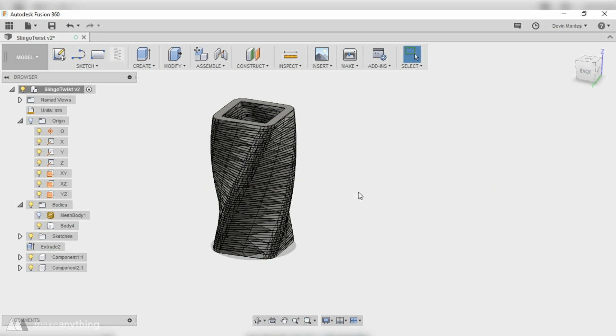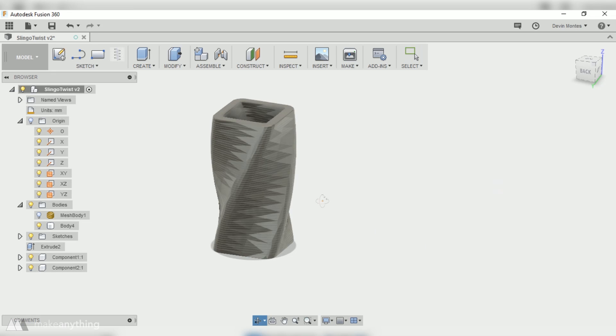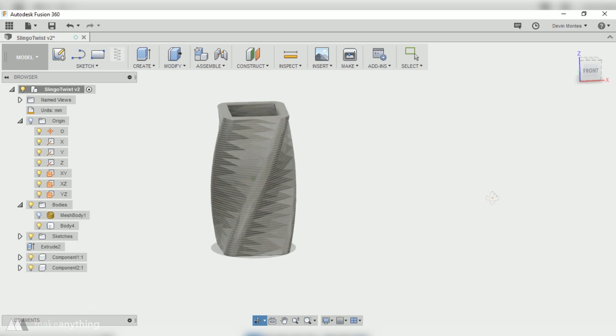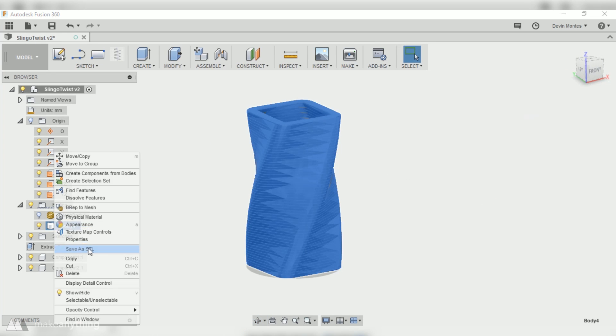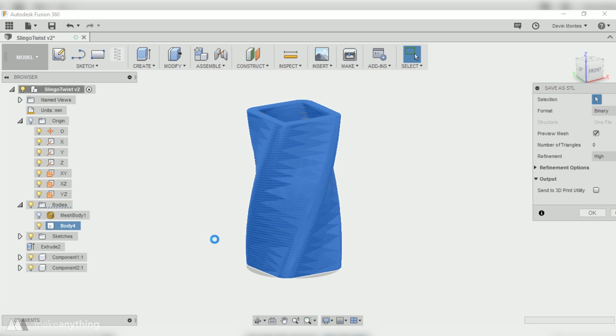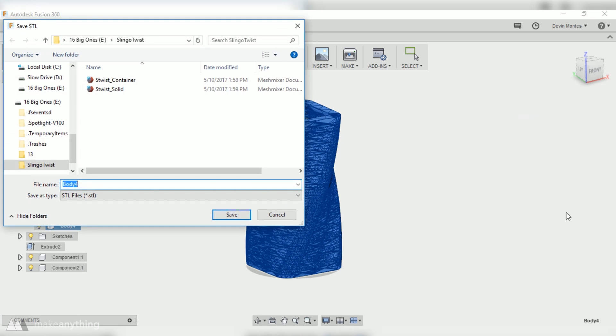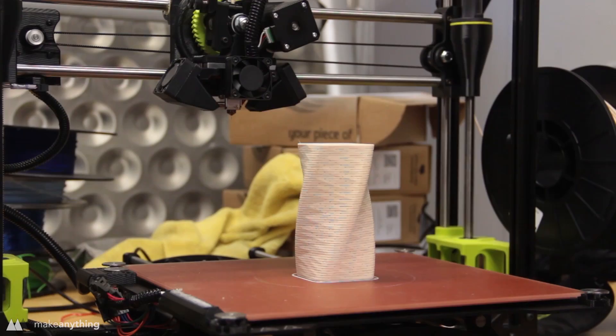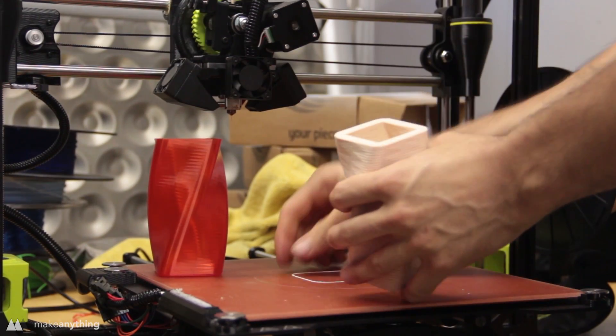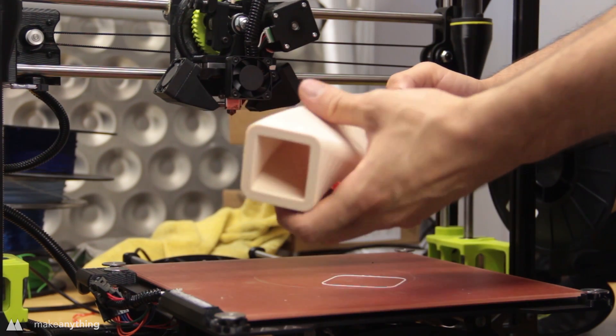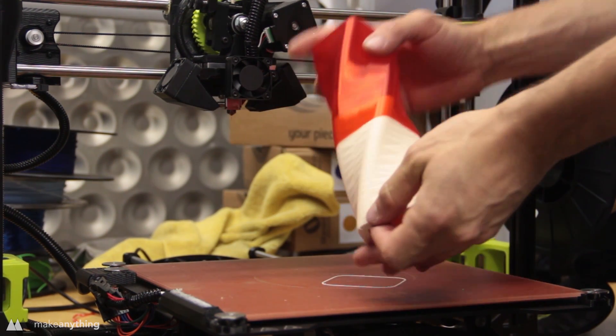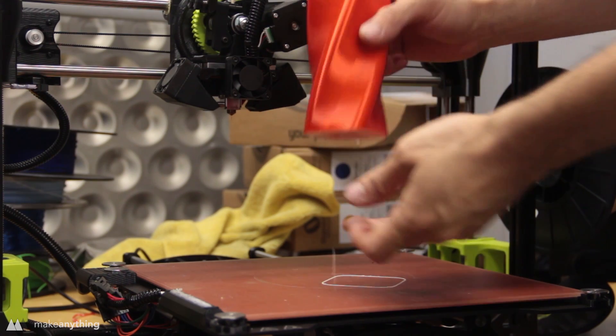That's it, we've got ourselves a new twist springo. I'll right-click on that body and export it as an STL file. Here we have that springo printed out once again on my Taz 6 using PLA plastic, and I also created this outer shell printing in vase mode to create a nice tight fitting container for the springo.